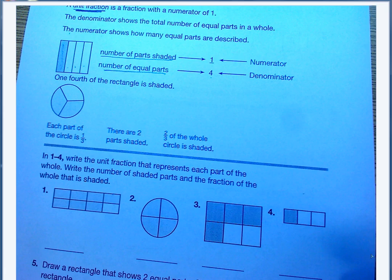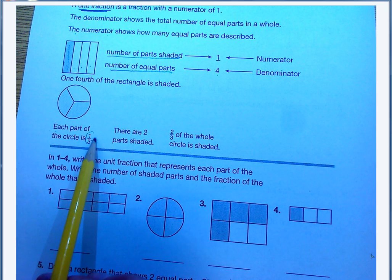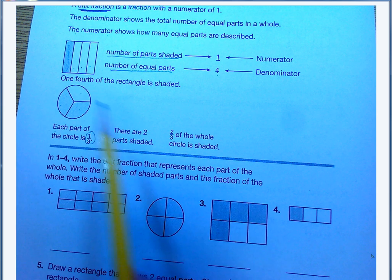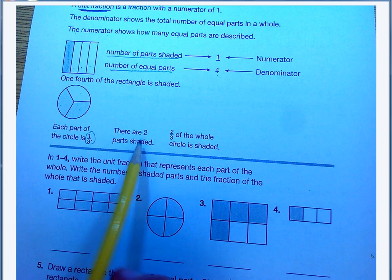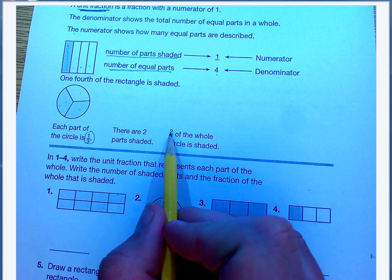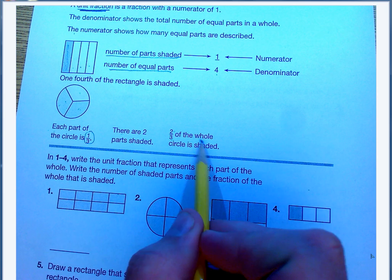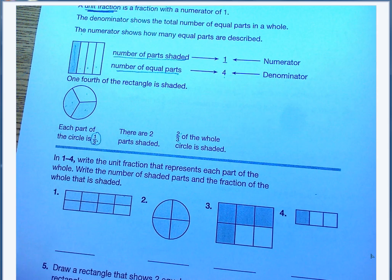It gives us another example problem here where each part of this circle, the unit fraction, is one-third. One, two, three total, and there are two parts shaded, one, two. You can see the two shaded here, which means I have a two on top as the numerator, a three on bottom as the denominator. Two-thirds of that whole circle is shaded.